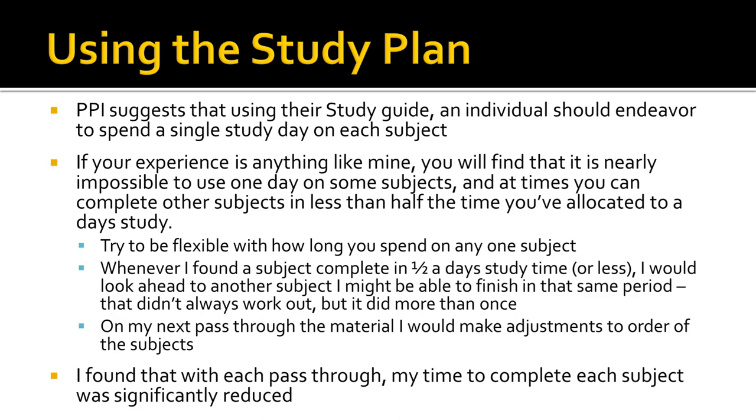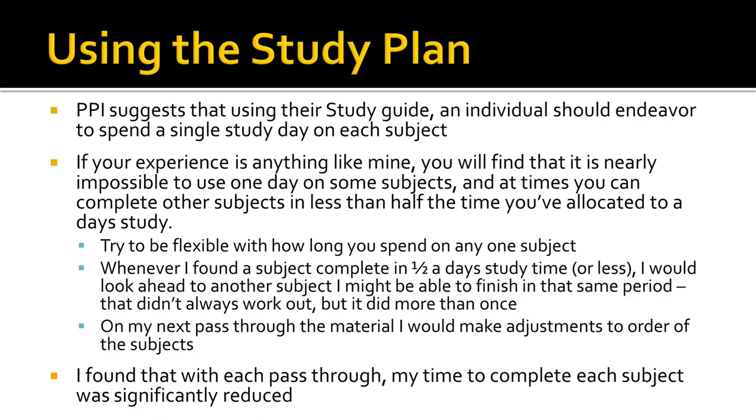On my second and then third pass through the material, I was able to make some adjustments. I didn't bother reprinting the whole study plan — I would skip items and you could tell by the absence of a completion date, then jump ahead, complete something, and come back to it later. That happened a lot in my second pass. In my third pass, I found that I had gone through the material quite a bit, so some subjects were very easy to go through quickly. Through each pass overall, I found that my time to complete each subject was significantly reduced — I got faster and faster.